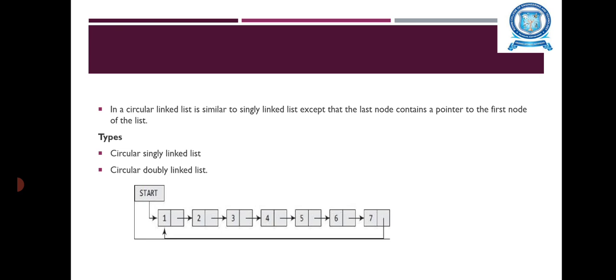Circular linked list is similar to singly linked list except that the last node contains a pointer to the first node of the list. There are two types of the circular linked list: the first one is a circular singly linked list, and the second one is a circular doubly linked list. This is the representation of the circular linked list.